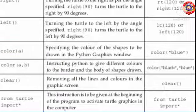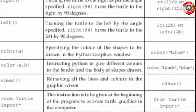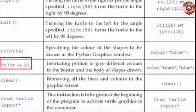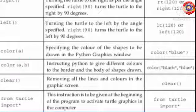Now 'color' — it is used to specify the color of the shapes to be drawn in the Python graphics window. For example, color('blue') will give blue color to the graphics drawn, that is the shapes drawn. If you want to give one color to the border and another color inside the body of the shapes, you can use color(a, b), providing two colors.